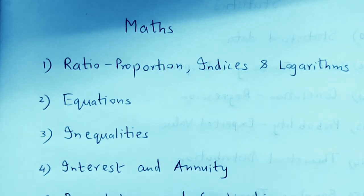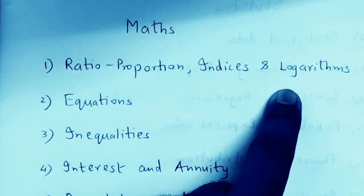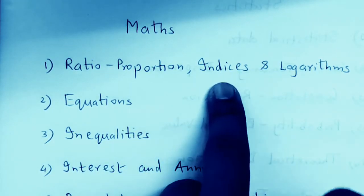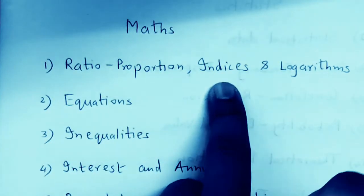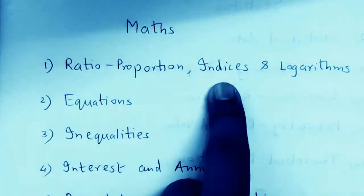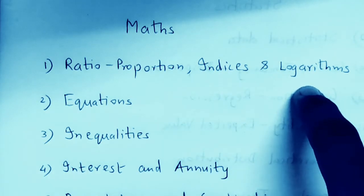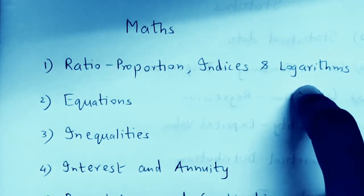The first chapter that should not be left as an option is Ratio, Proportion, Indices, and Logarithms. Don't get into very complicated sums — difficult sums appear but only one or two. In logarithms, don't get into complex log calculations; just study the basic sums related to the laws of logarithm. This chapter can be easily studied.